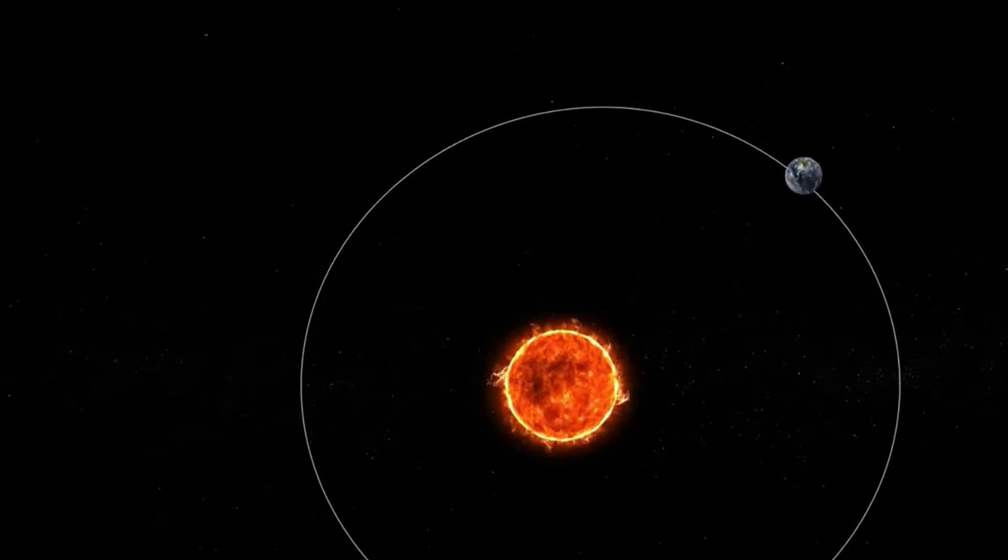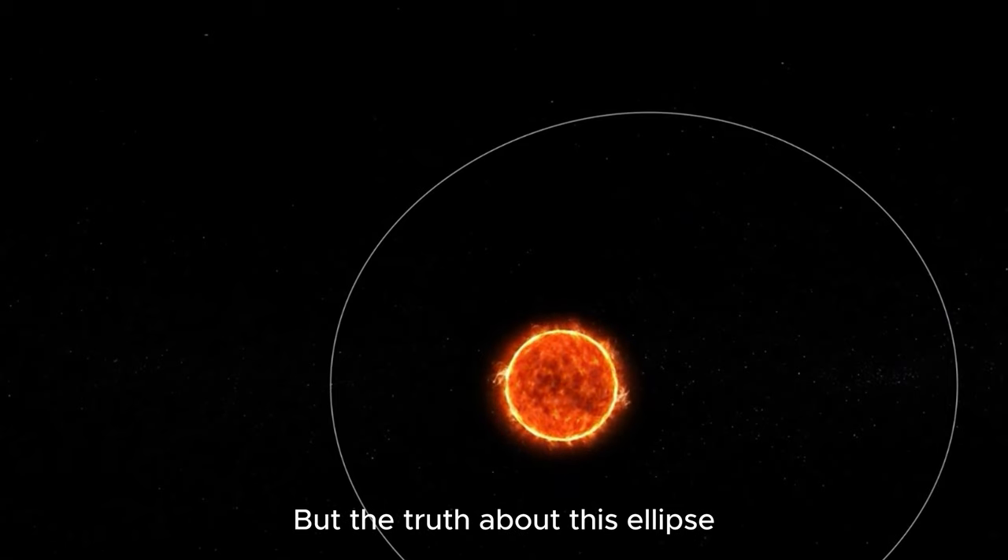It's not a standard circular motion, it's an oval shape. The Sun is at a focal point in the ellipse. But this ellipse is more like a circle, not the obvious oval shape shown in videos.